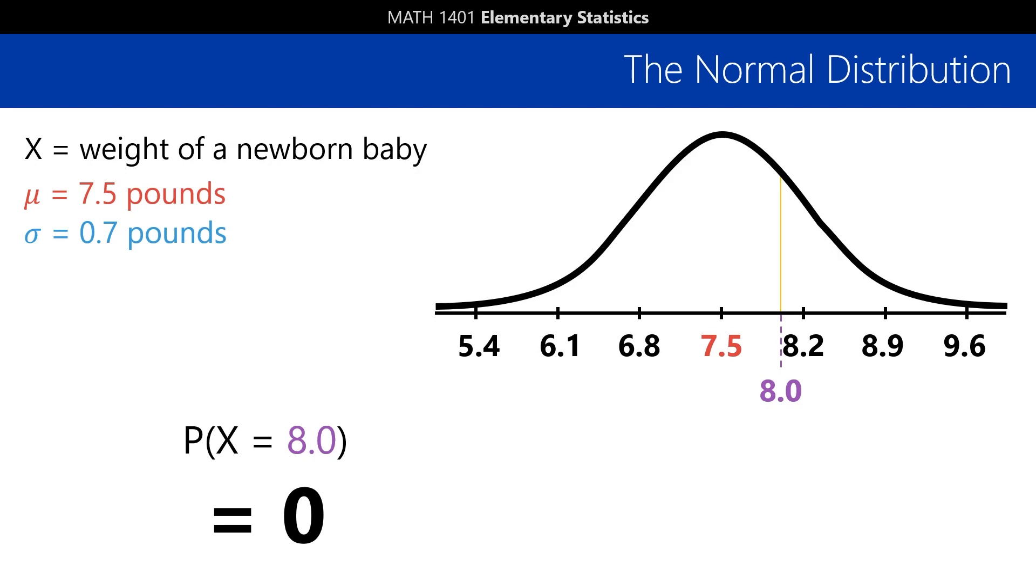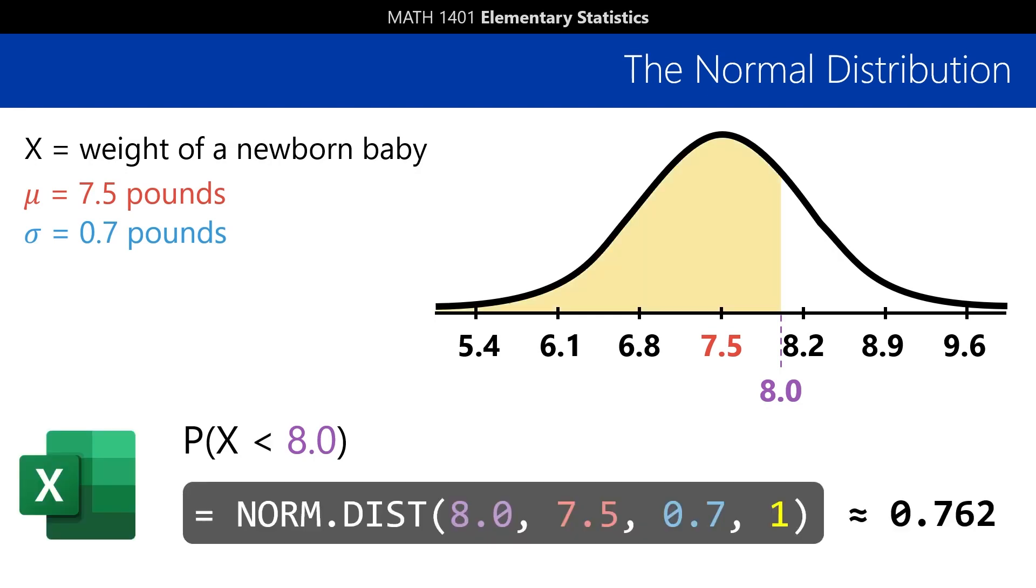The effect of this is that if you want the probability that a newborn is strictly less than 8 pounds, you get the exact same answer as before when it was less than or equal to 8 pounds. The equal to doesn't make much of a dent.